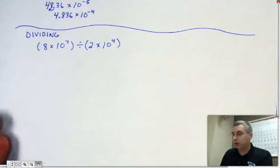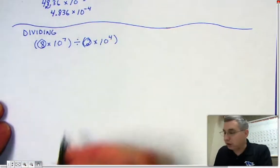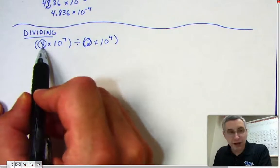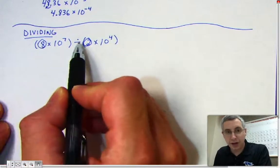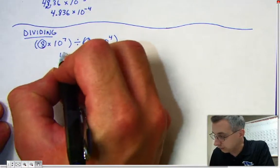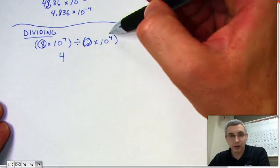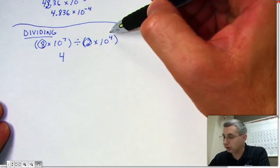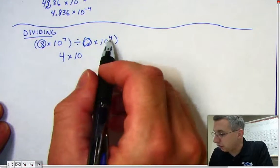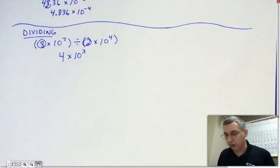When we multiplied, we used to take these numbers and multiply them together. But we're dividing now. 8 divided by 2 gives you 4. And before we used to add exponents, but now because we're dividing, we're going to subtract exponents. So it's times 10 and 7 minus 4 gives you 3. So the answer is 4 times 10 to the 3rd.